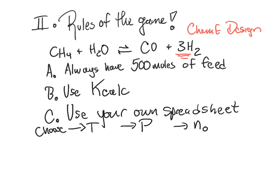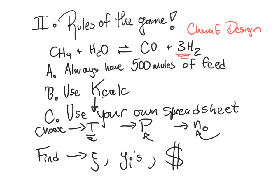I want you to set up your own spreadsheet — ideally the one you've been working with all along, tweaked a bit — so that you can choose temperature. As you choose temperature, remember that's going to change your Ka, so you'll need the K from Kcalc in there, but you'll also need the T that you've chosen. You're going to choose your own pressure — it doesn't have to be one bar. You are going to choose the feed moles of each component within limits, such that all your initial moles add up to 500. Then you are going to determine xi for that particular set of conditions, use that xi to find your mole fractions, and use all of this — T, P, feed, y's — to figure out how much money you make.